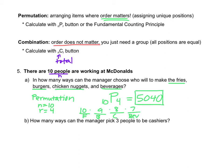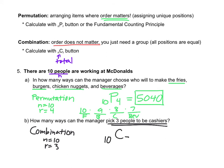For how many ways can the manager pick three people to be cashiers? Notice that all three people are going to be cashiers — they're all doing the same thing — so that's going to be a combination. For a combination, we use NCR on our calculator. N is still 10, and I'm picking three people to be cashiers, so that would be 10C3. Put that in your calculator or Desmos, and we end up with 120.